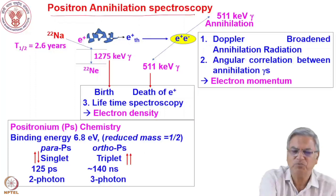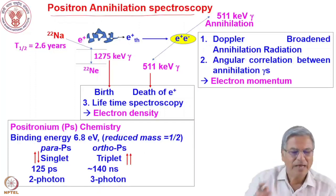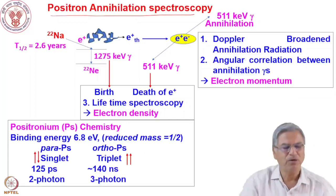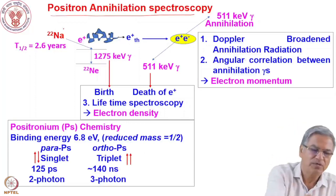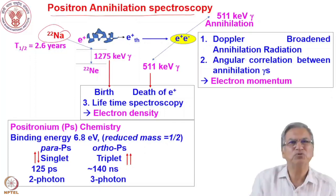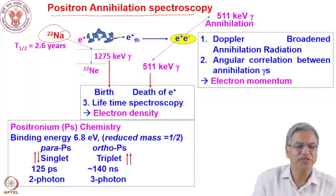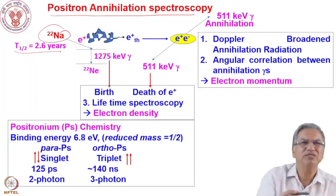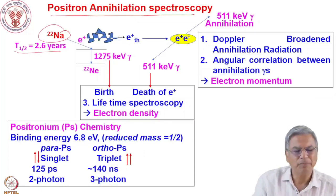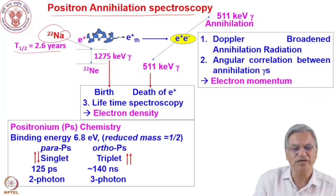First, let me discuss what positron annihilation spectroscopy is. You use a radioactive source which emits positrons — a positron emitter. It should have a sufficiently long half-life so that you do not need to change the sample repeatedly. The question is how this positron can be used to understand chemical or physical processes.